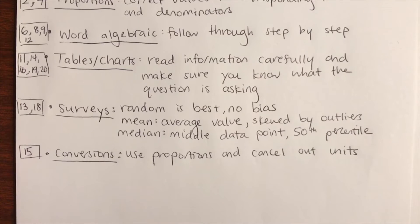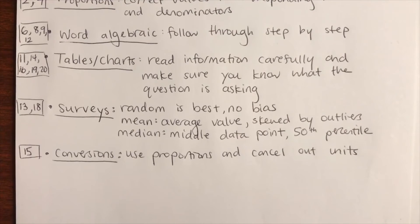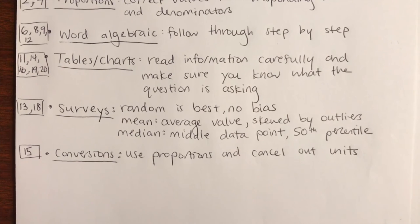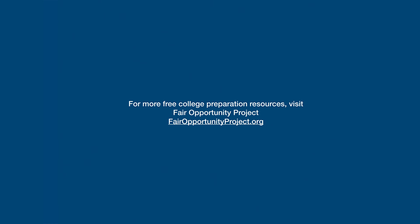In the questions covered today, there are a couple of tables and charts. Make sure you read the information carefully and know exactly what the question is asking. For survey data, the mean is your average value and can be skewed by outliers, whereas the median is the 50th percentile and represents the middle data point.